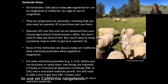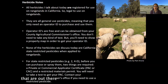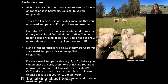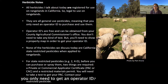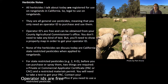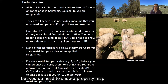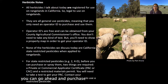There are two different kinds of pesticides: general use pesticides and state restricted pesticides. The three herbicides I'll be talking about today are all general use pesticides, meaning that to purchase and use them you only need an operator ID. Operator IDs are free and you can get them from your county agricultural commissioner's office. You don't need to take any test, but you do need to show a property map, and then you can go ahead and purchase and use that herbicide for that project.